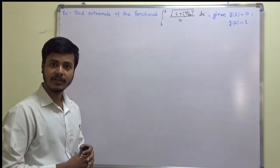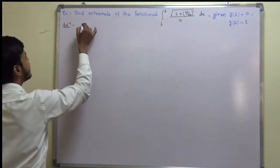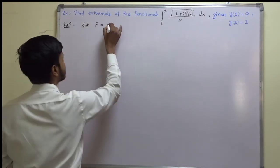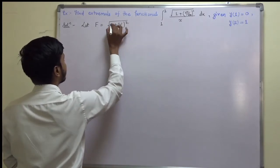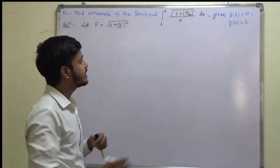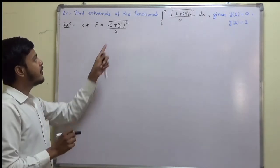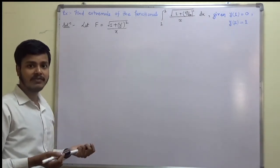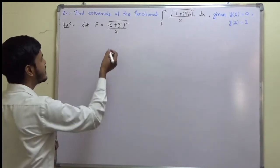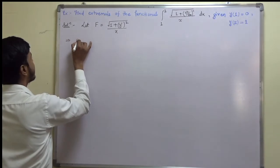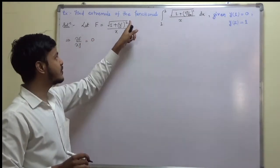We need to find the extremal. In this problem, our function f is the square root of (1 + y′²) / x. With this f, we find f_y and f_{y′} as required by Euler's equation. The partial derivative ∂f/∂y is equal to zero because there is no explicit term involving y.